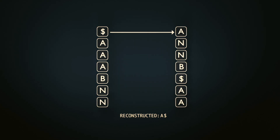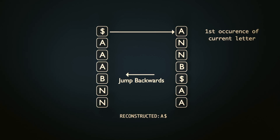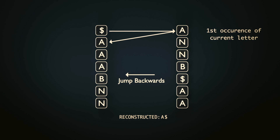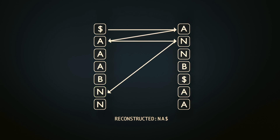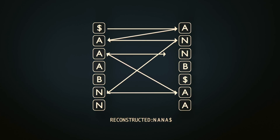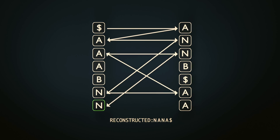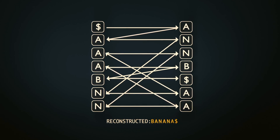The second rule: when jumping from the last column to the first, we jump from the i-th occurrence of the current letter to the corresponding one in the first column. In this example, we are now at the first A in the last column, so we jump to the first A in the first column. We then repeat the two rules: jump right; jump from first N to first N; jump right; jump from second A to second A; jump right; jump from second N to second N; jump right; jump from third A to third A; jump right; and finish it off at B. We have now recovered the original string, banana with a dollar sign.